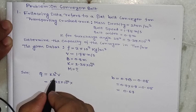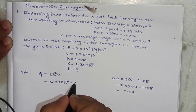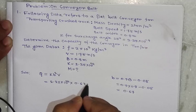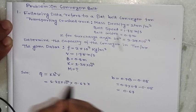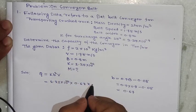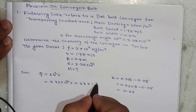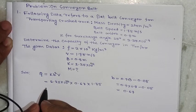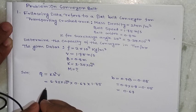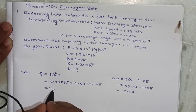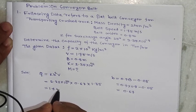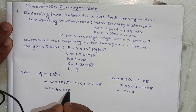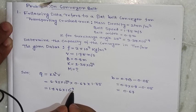Substituting b equals 0.67 and v equals 1.75, the volume capacity Q comes out to 1.846 into 10 to the power minus 4 meter cube per second.